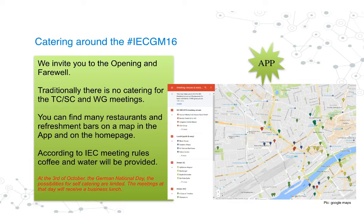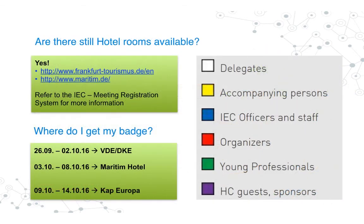If there is someone attending the meeting spontaneously, are there still hotel rooms available? It is pretty close to the meeting now. If you do not have a hotel reservation right now, it is better to go to the links mentioned on the slide. There is a Frankfurt Tourismus office where you can get some help to find accommodation for the night. You can also use other booking services, but the later you come, the higher the prices will be.